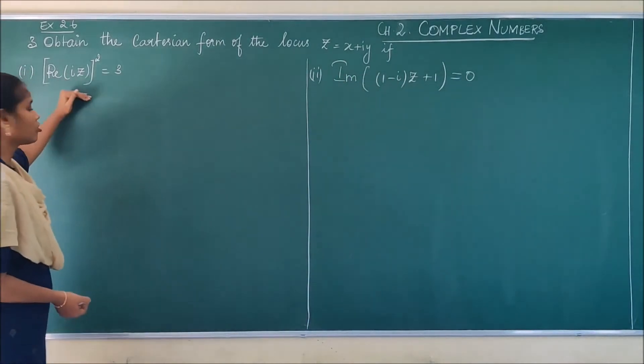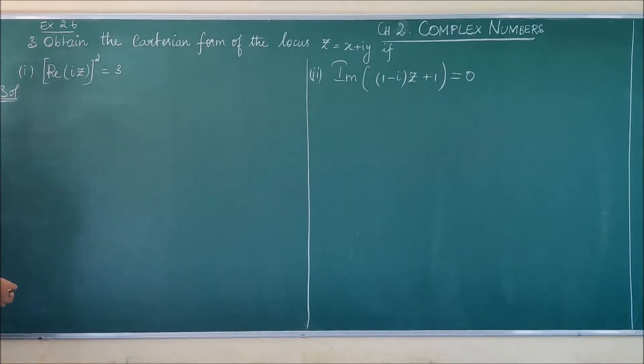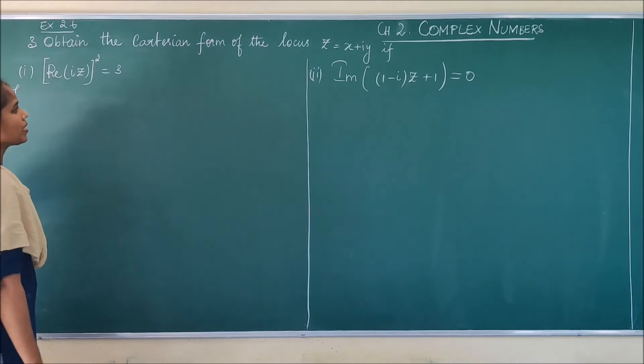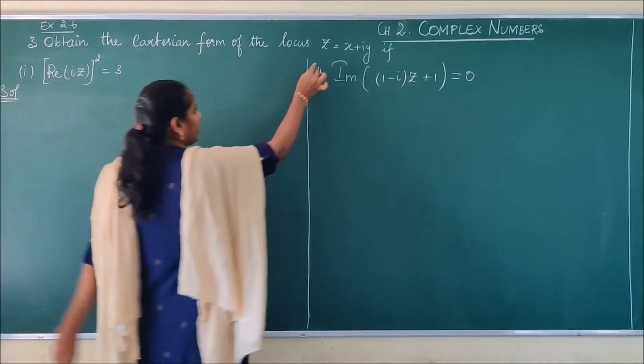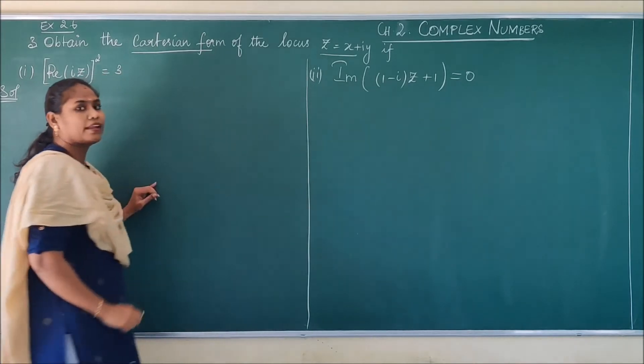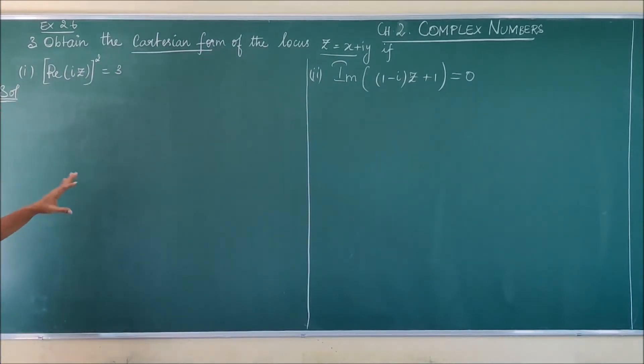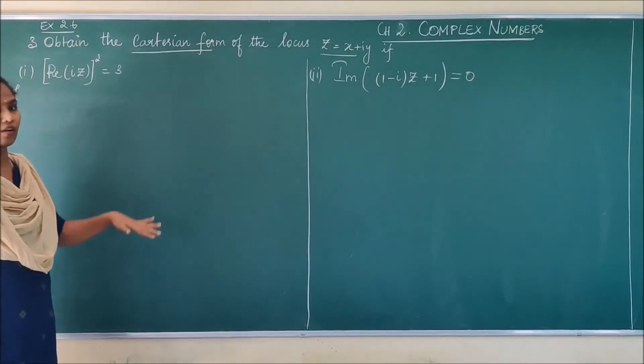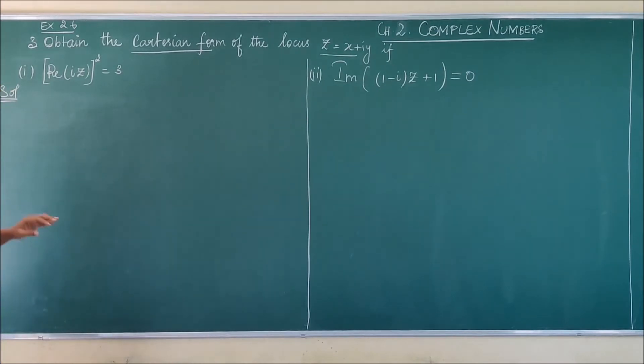Now we are going to solve this problem. First, I am going to substitute z equals x plus iy. Cartesian form means your answer should be in x and y alone, that should not be z there. Your answer must be in x and y, called Cartesian form.